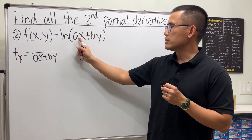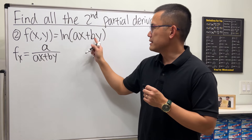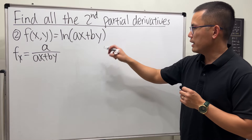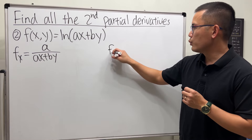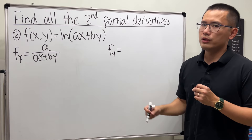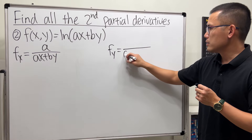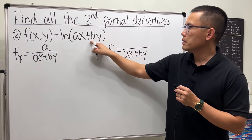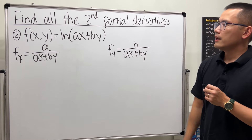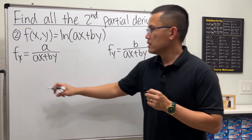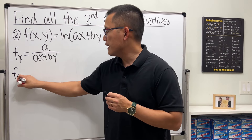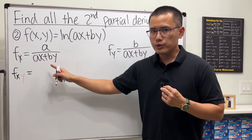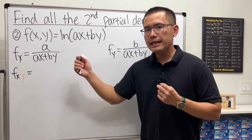Taking the partial with respect to x: the derivative of ln gives one over (ax + by), then multiply by the derivative inside with respect to x, which is just a (b is a constant in the x world, so by gives zero). For fy, we get pretty much the same structure: the denominator is also (ax + by) and the numerator will be b.